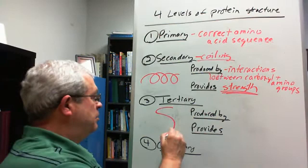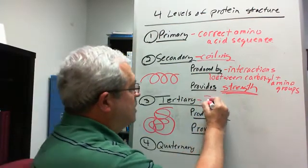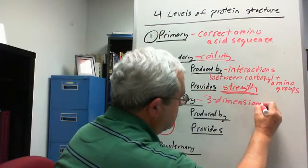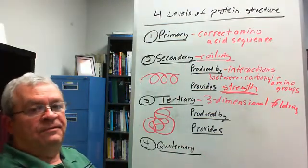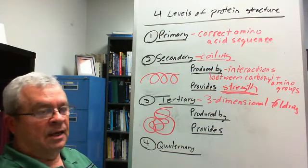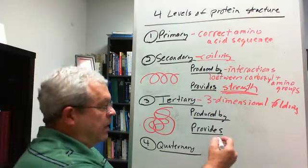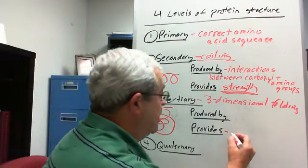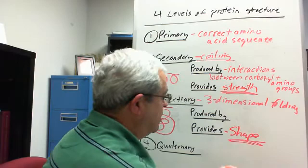Tertiary. We have some pictures in your book. It looks like kind of a hodgepodge. And this is a three-dimensional folding. A three-dimensional folding of the amino acid chain. This is what gives that magic word. I'll write it right down here first. And it provides what's critical to the functioning of proteins: shape.